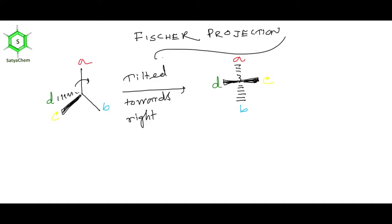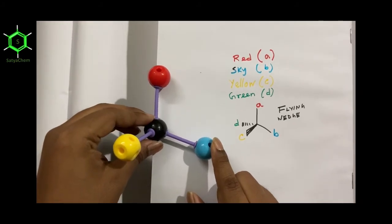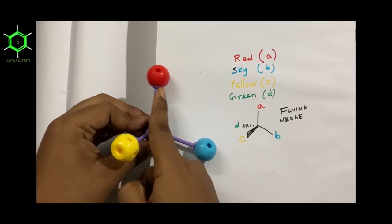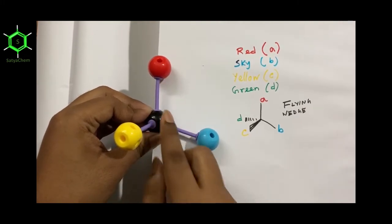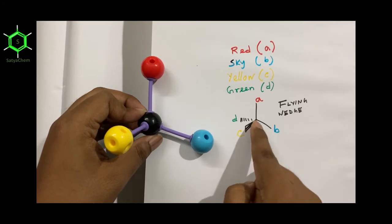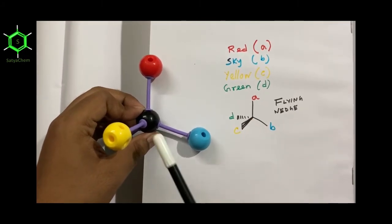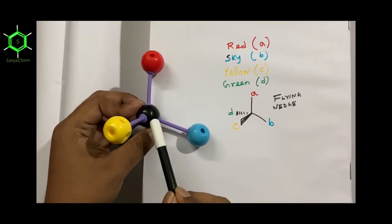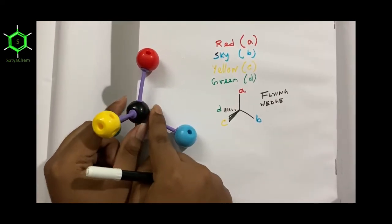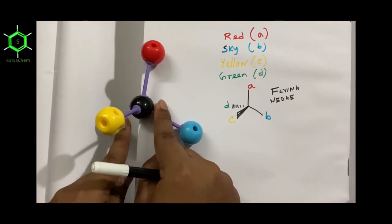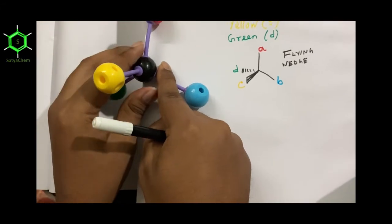Now let's use a real molecular kit to understand the representation. The solid bond indicates it is in the plane of the paper — the red and sky atoms are in the plane of the paper. The bold bond indicates it is above the plane of the paper — yellow is above the plane of the paper. The dashed bond indicates it is below the plane of the paper — green is below the plane of the paper.